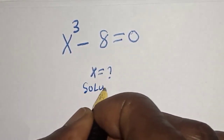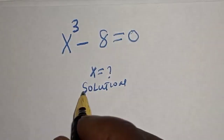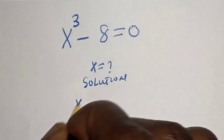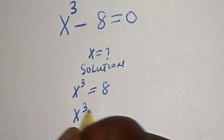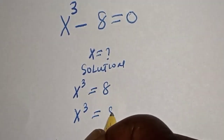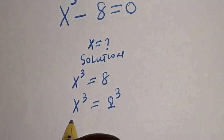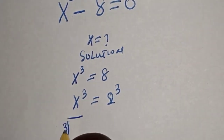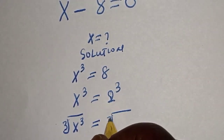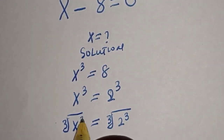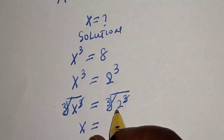Solution. The question is s raised to power 3 minus 8 is equal to 0. Let's solve: s raised to power 3 is equal to 8, which means s raised to power 3 is equal to 2 raised to power 3. Now let's take the cube root of both sides. The cube root of s raised to power 3 equals the cube root of 2 raised to power 3. These cancel, giving us s is equal to 2.